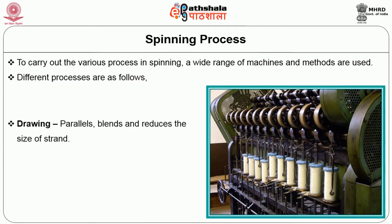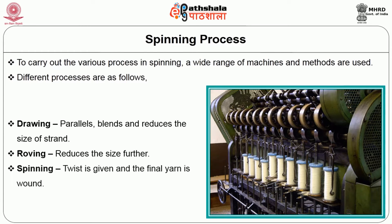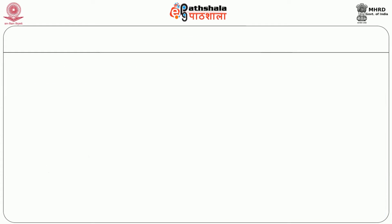Drawing parallels, blends and reduces the size of the strand. In roving, it reduces the size further. Last is spinning — the twist is given and the final yarn is wound. Let us see the spinning process in detail.